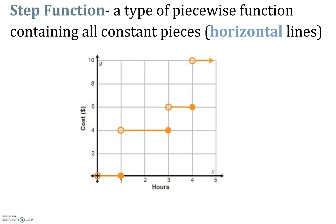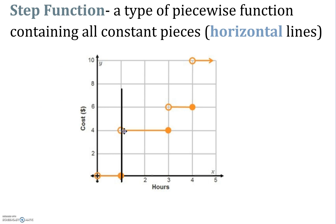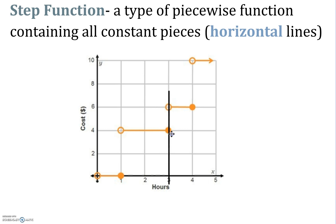Sometimes a step function can represent a function, and other times it won't. For this example, you're going to see that this is a function because it passes the vertical line test. When I go to x equals 1, there's a closed and open circle, which means there's only one y value at x equals 1. When I go to x equals 3, although you see two points on that vertical line, one is open and one is closed, which represents a function.